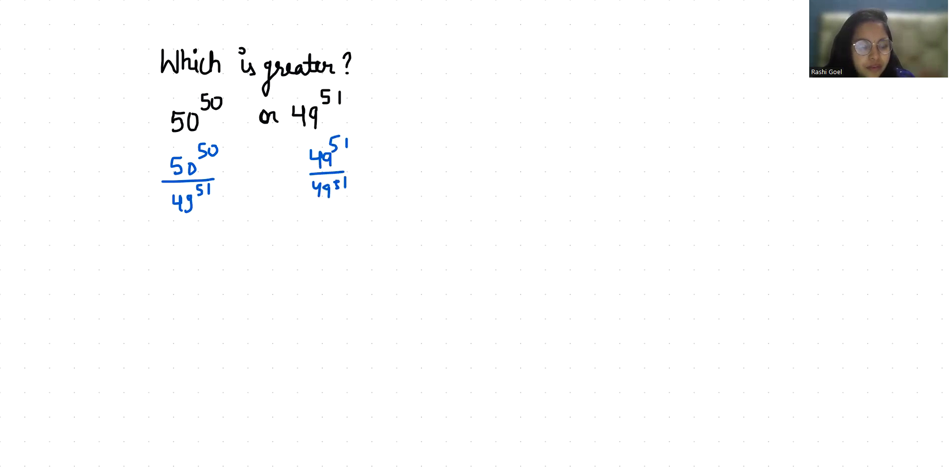So 50 power 50 by 49 power 51. We can write it as 50 plus 1 and this is 1.